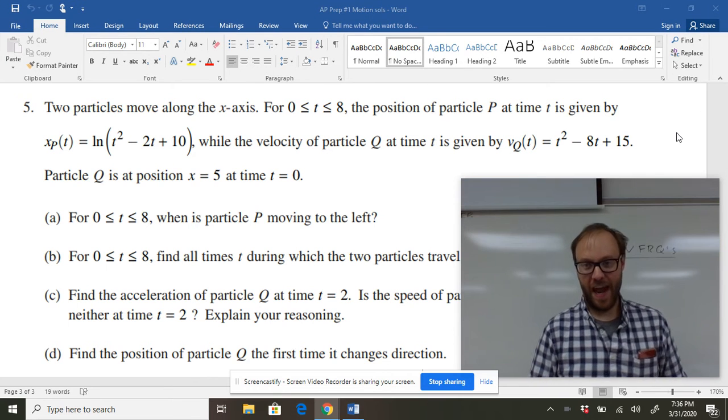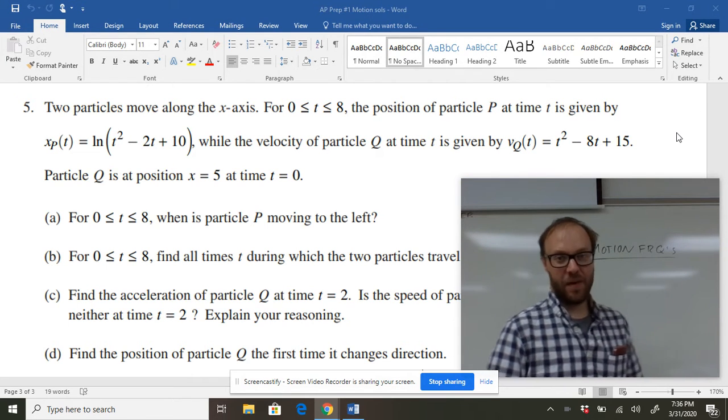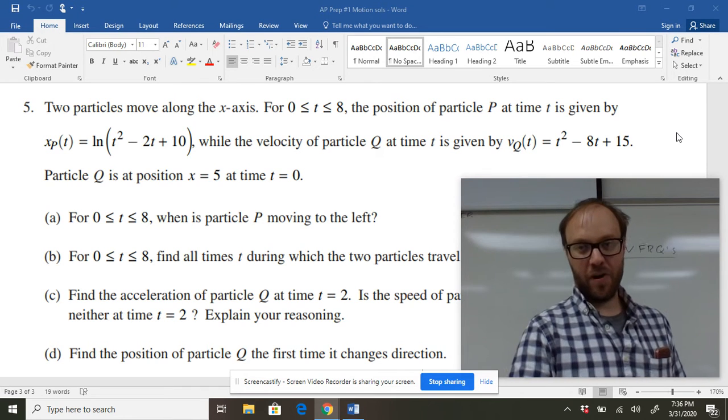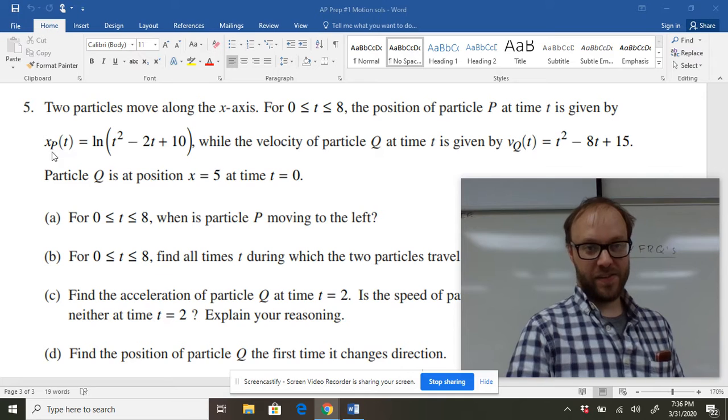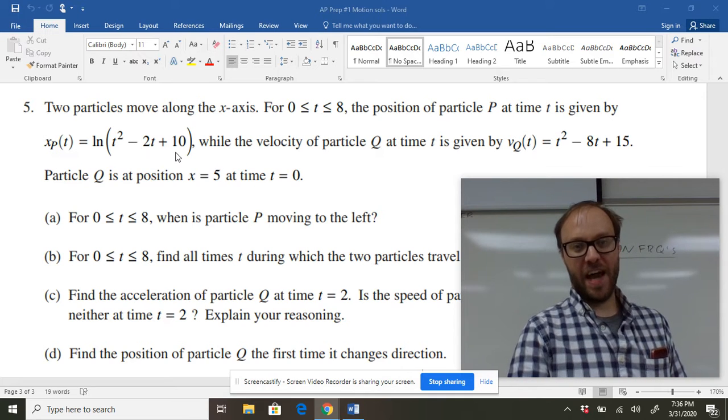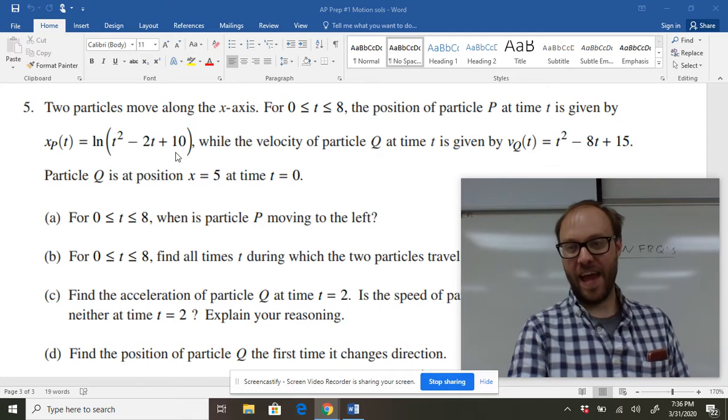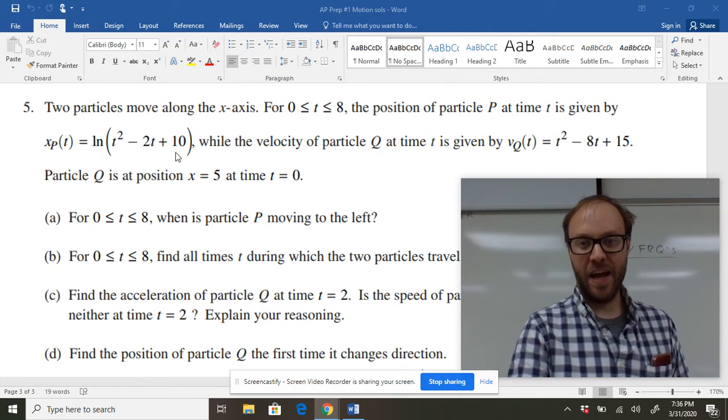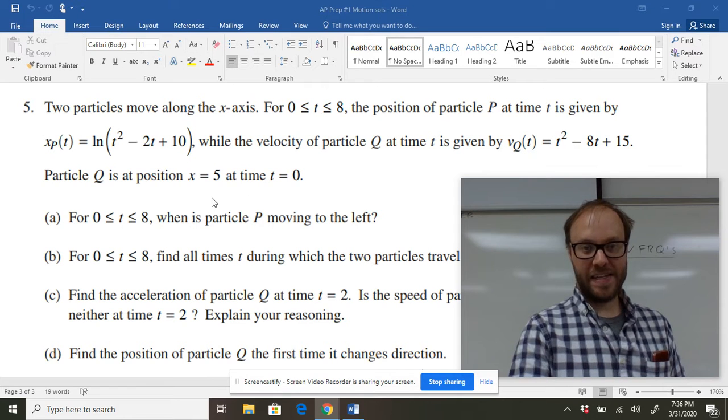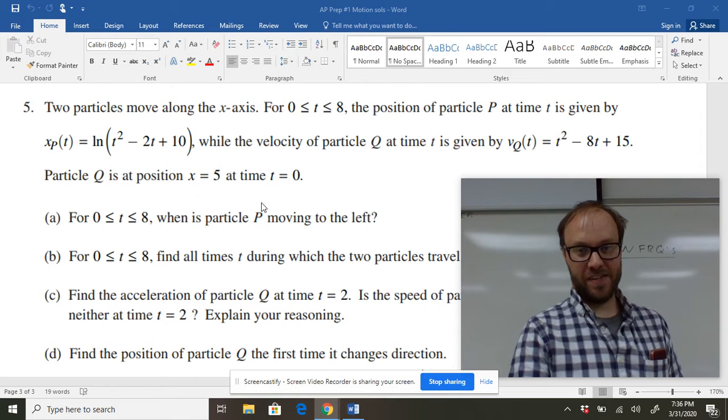We'll look at 3A and then we'll kind of go from there. So 3A, we've got particles moving along the axis. You can see here the position of particle P is given by this position, so it's like an X position at a certain time. It gives you back the number on the X axis that its location is at. They give us a velocity for this other particle. And they tell us, and this is really important, they tell us the initial position. It starts out at position five when T is equal to zero.